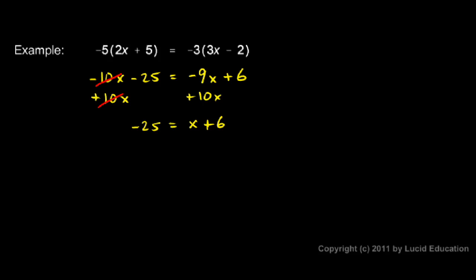Now I'm going to isolate x. I'm going to leave it over here on the right and that's okay. I can isolate it by subtracting 6. And if I subtract 6 on the right, I subtract 6 on the left. On the right, the plus 6 and the minus 6 cancel each other out, leaving me with x on the right all by itself. x is now isolated. On the left side, I have negative 25 minus 6, and that ends up being negative 31. So x is equal to negative 31.